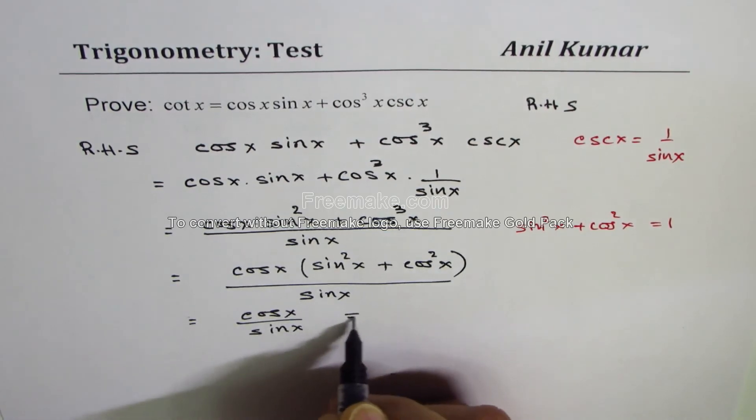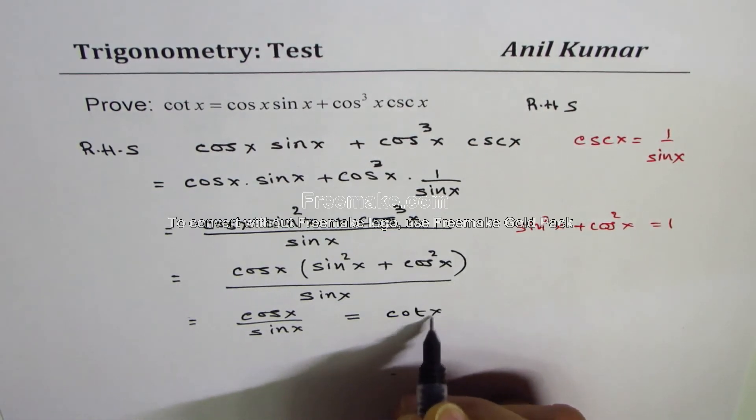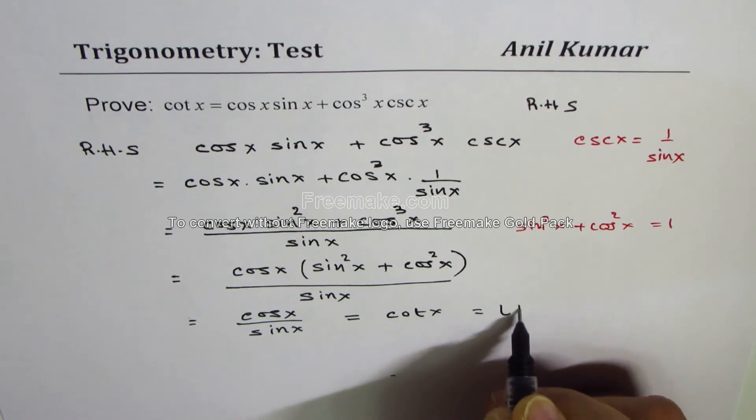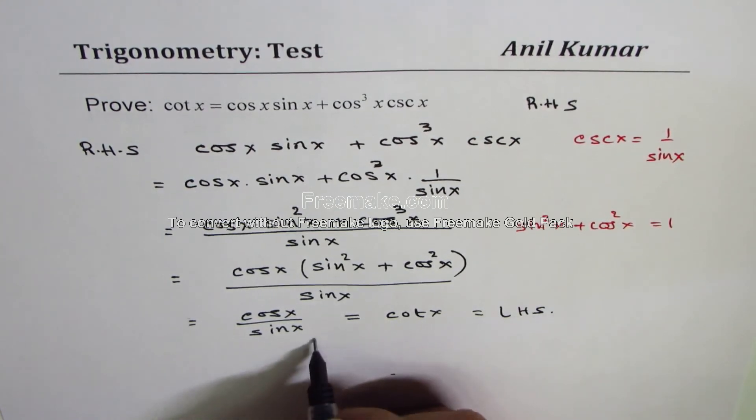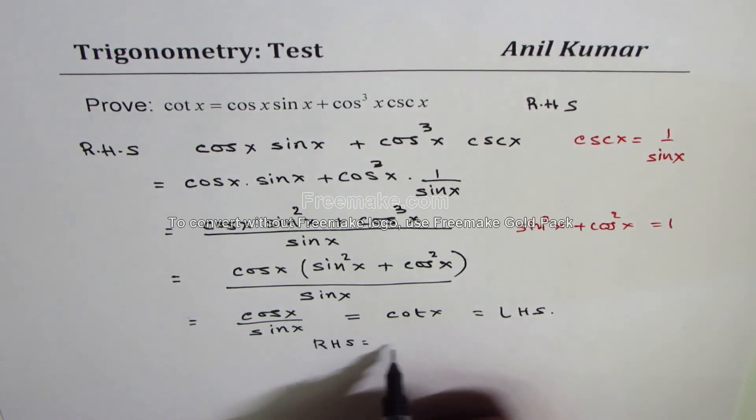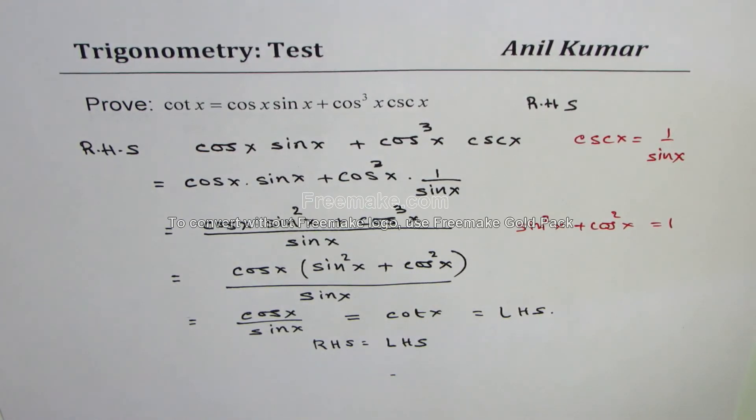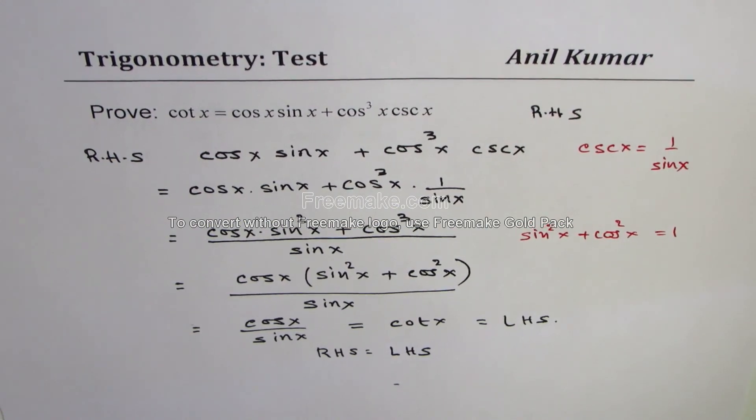And that equals cotangent x, which is the left-hand side. So we've shown that the right-hand side equals the left-hand side. That is how you prove this identity. I hope the steps are absolutely clear. We'll take up another identity in the next video. Thank you.